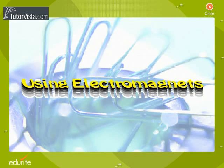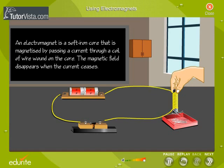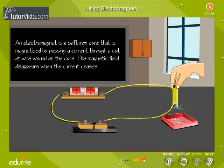Using Electromagnets. An electromagnet is a soft iron core that is magnetized by passing a current through a coil of wire wound on the core. The magnetic field disappears when the current ceases.